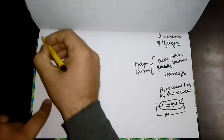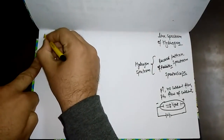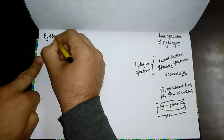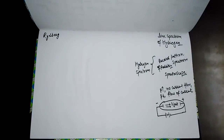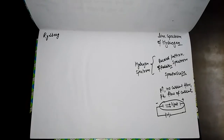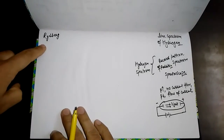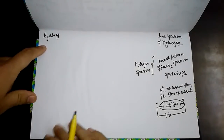A scientist named Rydberg gave a formula — a simple theoretical equation for the calculation of wavelengths of different series of the hydrogen spectrum. We just need to remember this formula to calculate the wavelength of this spectrum.